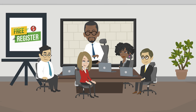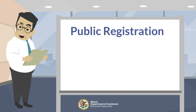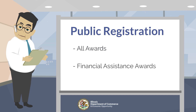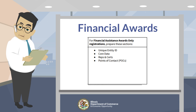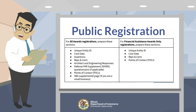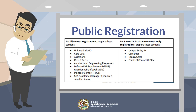Once you have verified you are on the legitimate website for SAM.gov, you are ready to create an account and prepare to register your entity. There are two registration purpose types to select from: all awards registration and financial assistance awards only. The all awards registration allows you to bid on contracts, other procurement matters, as well as apply for financial assistance. The financial assistance awards only registration allows you to apply for financial assistance, grants, and loans. In this training, we will be covering the steps for financial assistance awards only.